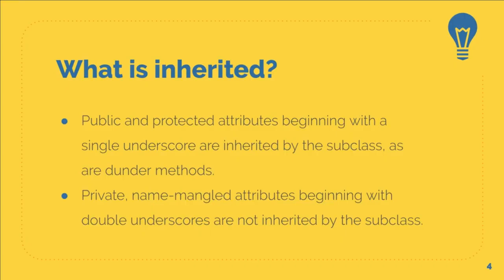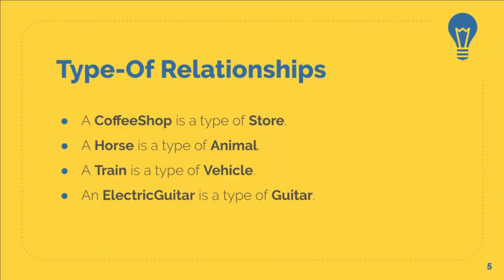The most important takeaway in this lesson is for you to start thinking about the relationship between a subclass and its superclass. That relationship can be described as a 'type of' relationship — the subclass can be described as a type of the parent class. It is a more specific thing of the thing that it is inheriting from.